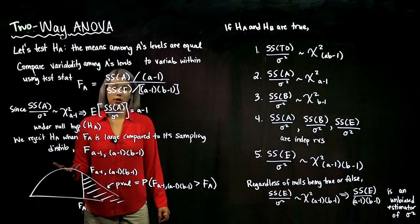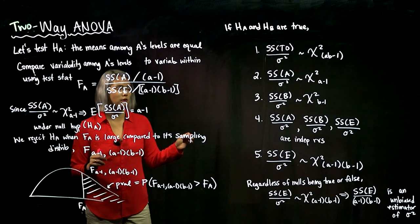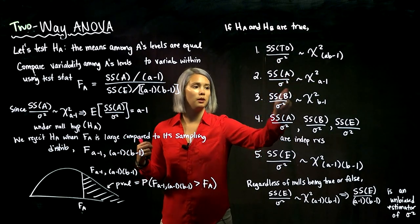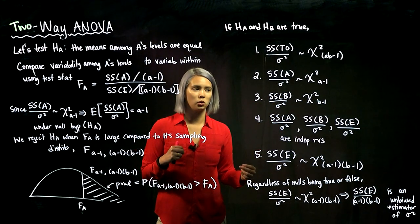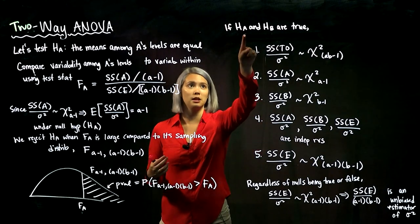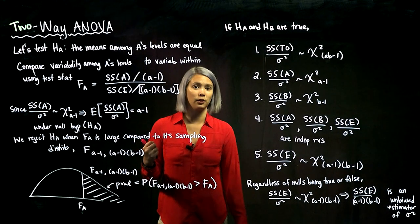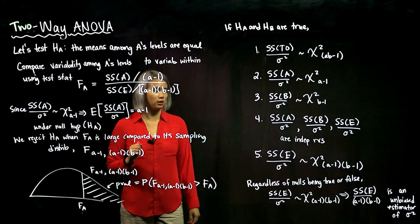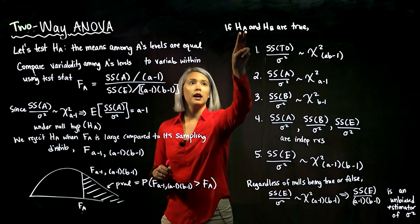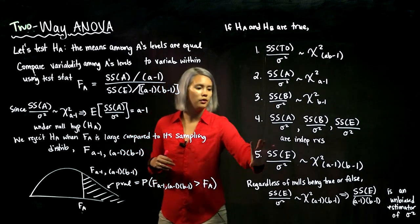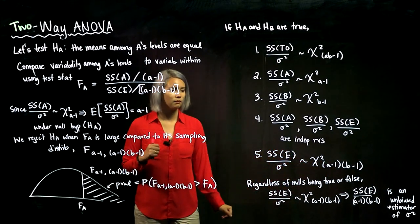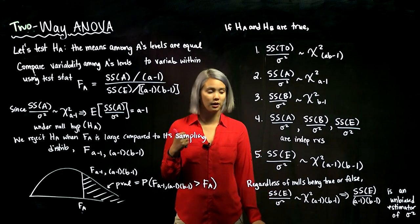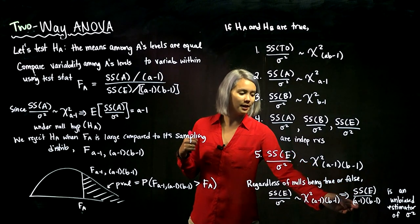We also want a good unbiased estimator for sigma squared. If the null hypothesis for A were true we could use SSA, and if the null for B were true we could use SSB, but we can't rely on those being true. So what we rely on is SSE over sigma squared having a chi-squared distribution with (A-1)(B-1) degrees of freedom — because whether the null for A and the null for B are true or false, that finding still holds. Therefore, a good unbiased estimator for sigma squared is SSE divided by (A-1)(B-1).